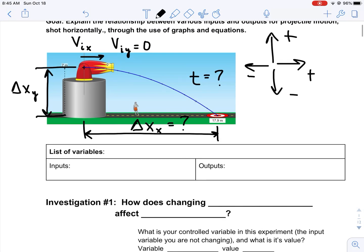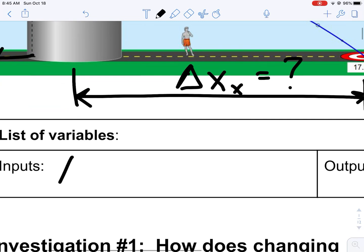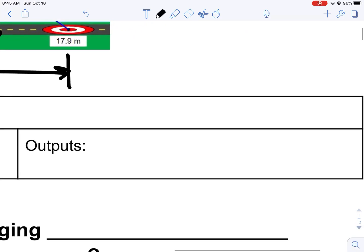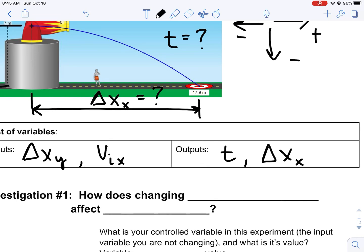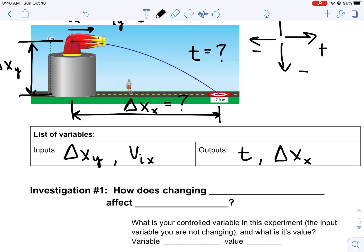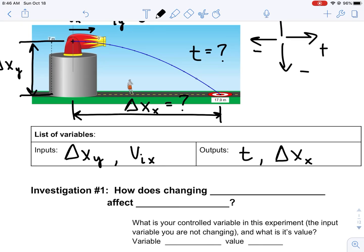If we list these out right here, our inputs are displacement in the y direction and initial velocity in the x direction. And as a result of modifying those inputs, we could end up affecting time and the horizontal displacement. Notice the subscript x, Δx_x, horizontal displacement, Δx_y, vertical displacement.